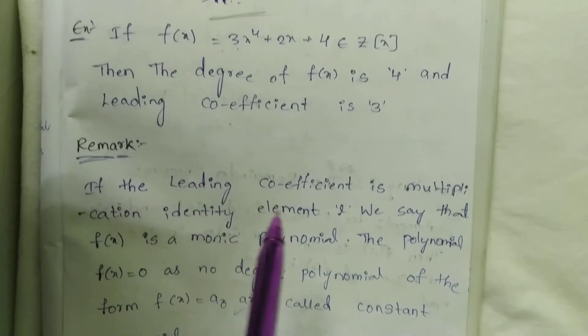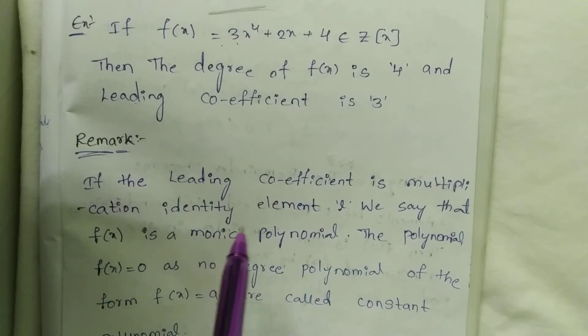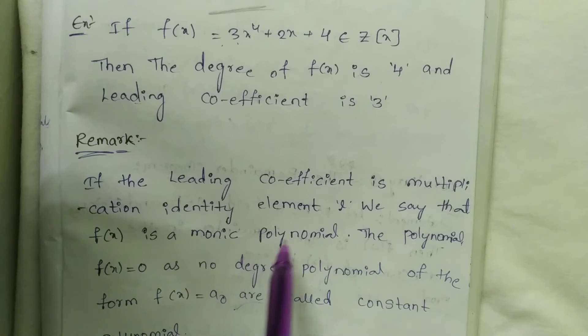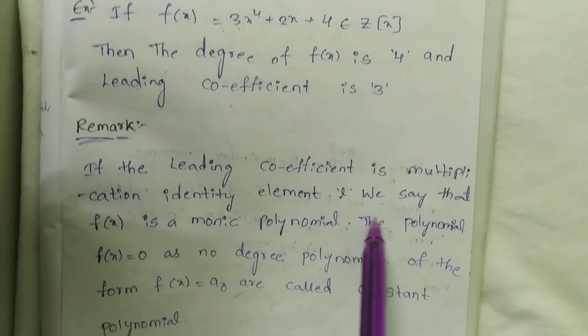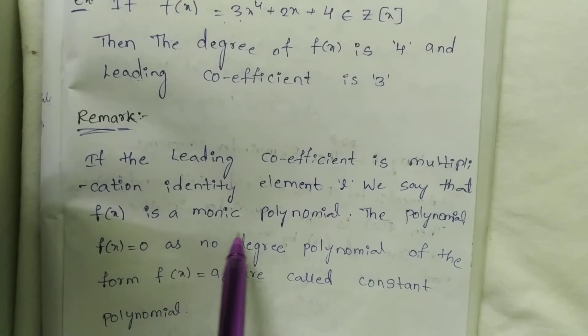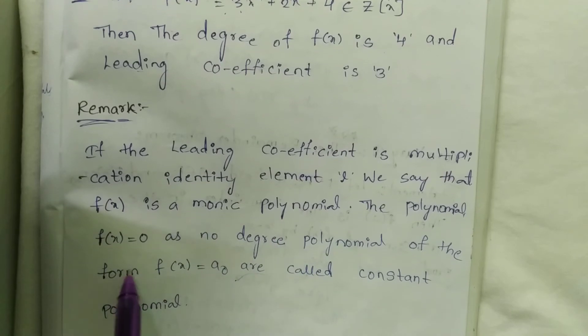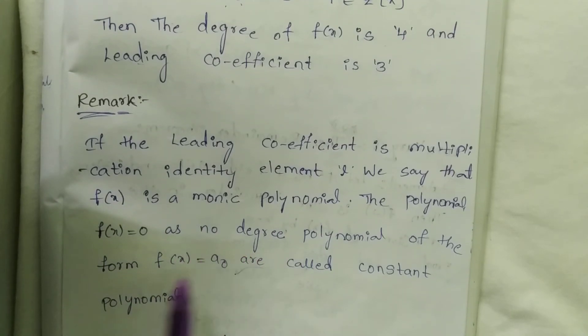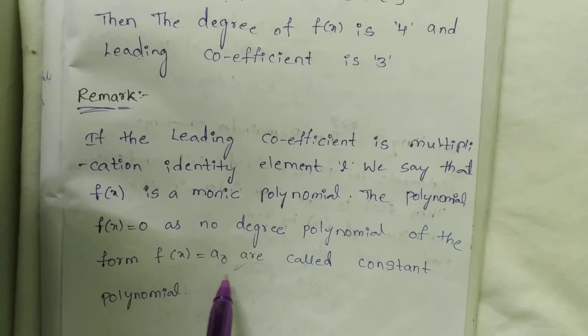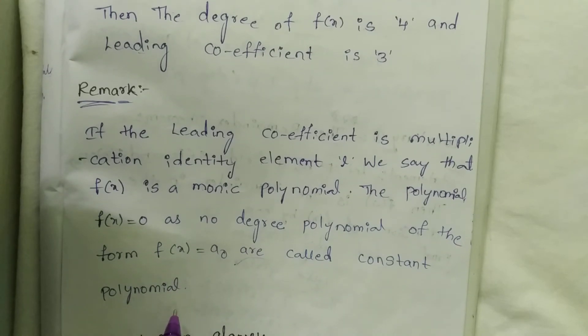Remark: If the leading coefficient is the multiplicative identity element, we say that f(x) is a monic polynomial. The polynomial f(x) = 0 has no degree. Polynomials of the form f(x) = a₀ are called constant polynomials.